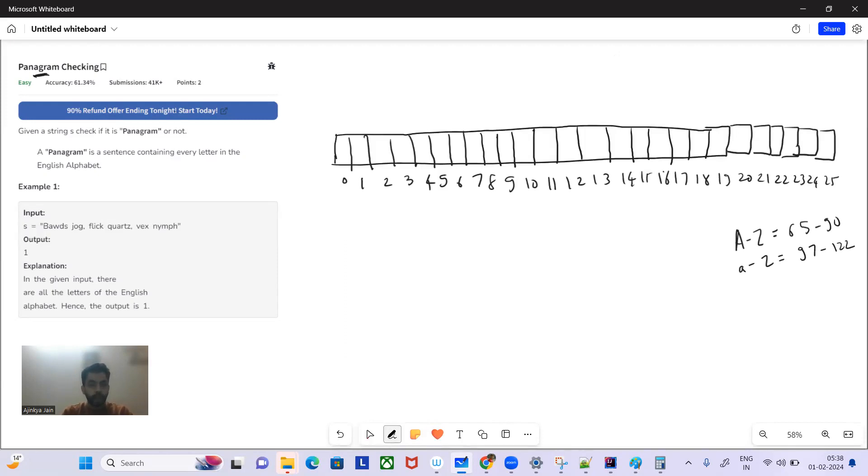So what the problem says is a string is a pangram if it contains all the letters from either small a to z or big A to Z. If such is the case, you have to return 1, else return 0.